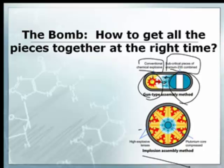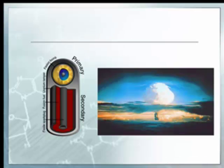In the gun-type, you have the subcritical uranium-235 and then some chemical explosive. They have to bring them together at exactly the right time. Once they get together at exactly the right time, you now have a supercritical mass and it blows up. You can either draw them together into the center or use a gun design — and then kablooey.